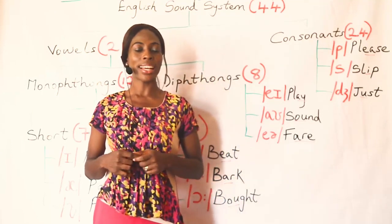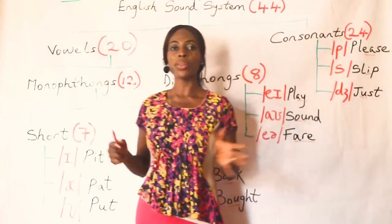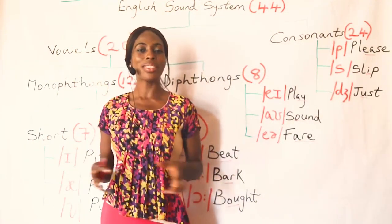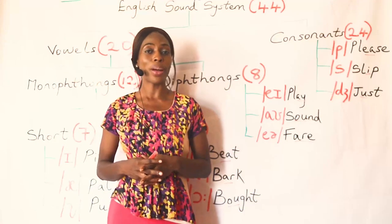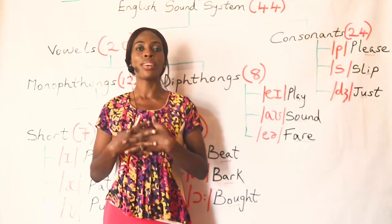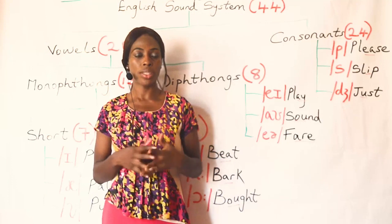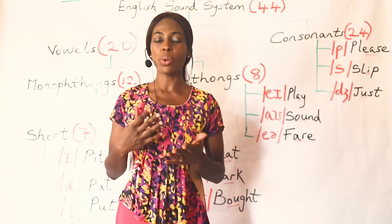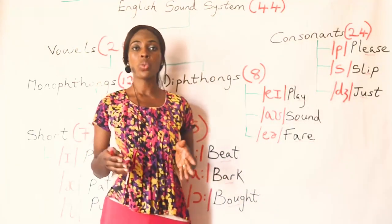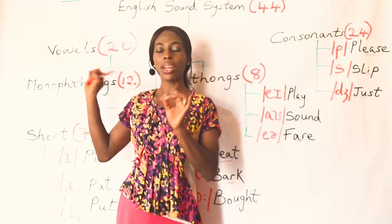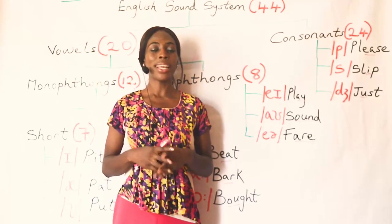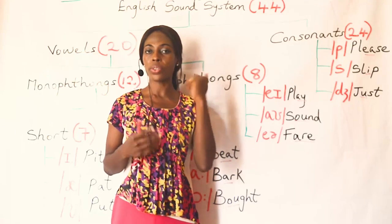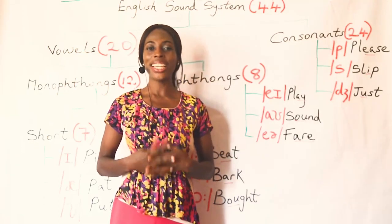Now today, like I said, we'll be introducing ourselves to the English sound system. I want you to know what the sounds in the English sound system are all about. We'll be looking at the British pronunciation, which is the received pronunciation. So as I say the sounds, I want you to repeat after me. This is the first of its series — we'll look at them one after the other, and I'll place the link in the description box. I'll also try and place the card above here so you can click it easily.